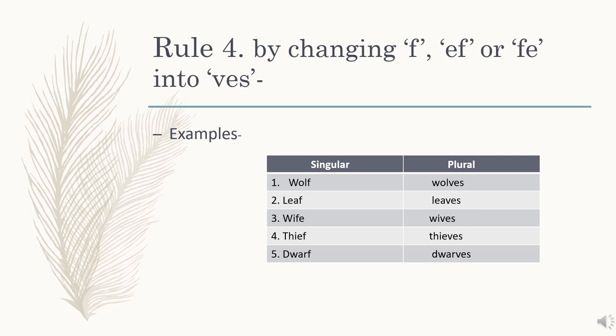Rule number 4: by changing f, fe, or f into ves. According to this rule, when we are making the plural form of a word which ends with f, fe, or f, we have to remove these letters and write ves instead. For example: wolf becomes wolves, leaf becomes leaves, wife becomes wives, thief becomes thieves, droff becomes droffs.